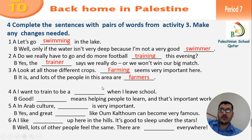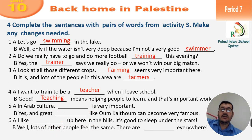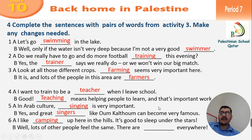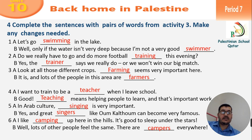It is, and lots of people in this area are farmers. Number four: I want to train to be a teacher when I leave school. Good, because teaching means helping people to learn and that's important work. Number five: In Arab culture, singing is very important. Yes, and great singers like Umm Kulthum can become very famous. Number six: I like camping up here in the hills. It's good to sleep under the trees. Lots of other people feel the same — there are campers everywhere.